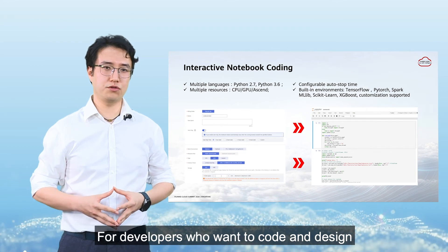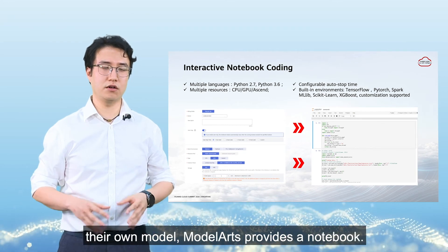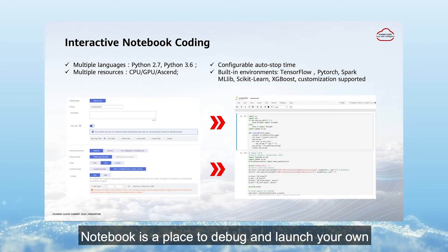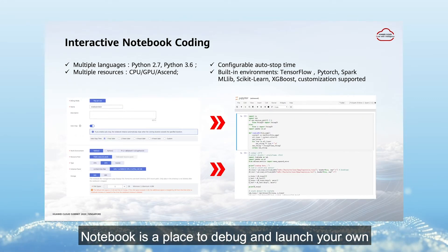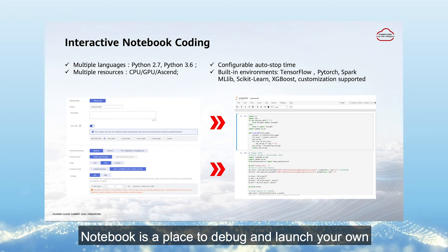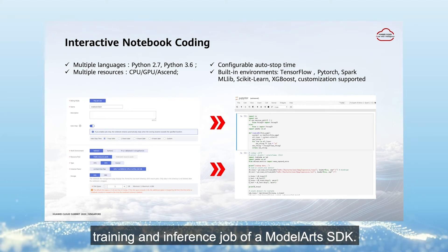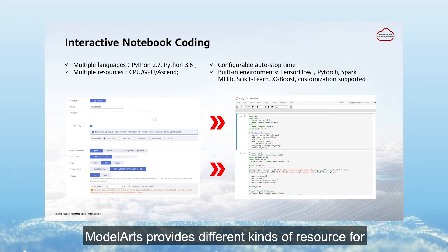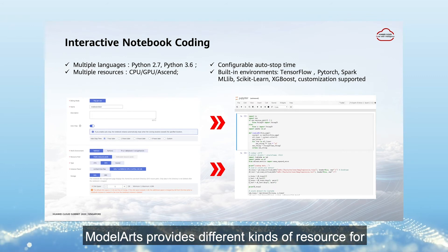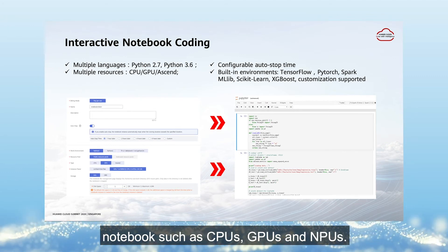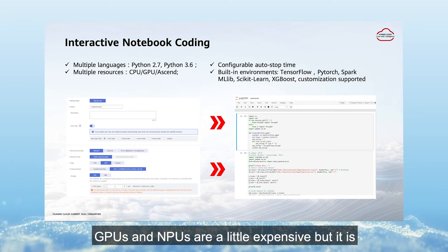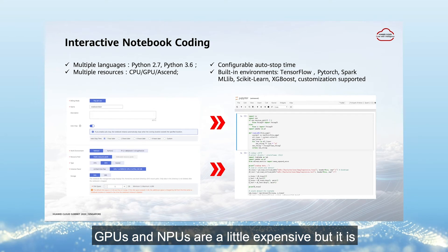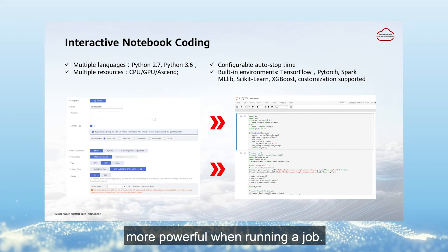For developers who want to code and design their own models, Model Arts provides a Notebook environment. Notebook is a place to debug and launch your own training and inference jobs using the Model Arts SDK. It is very convenient and powerful. Model Arts provides different kinds of resources for notebooks, such as CPUs, GPUs, and NPUs. GPUs and NPUs are more expensive but more powerful when running jobs.